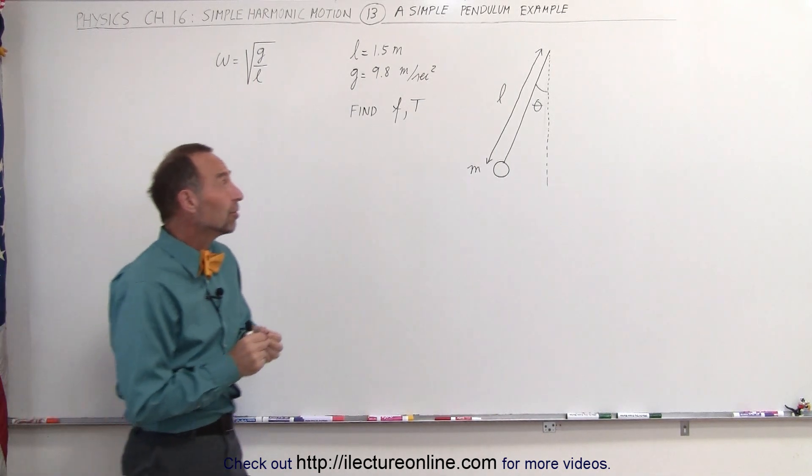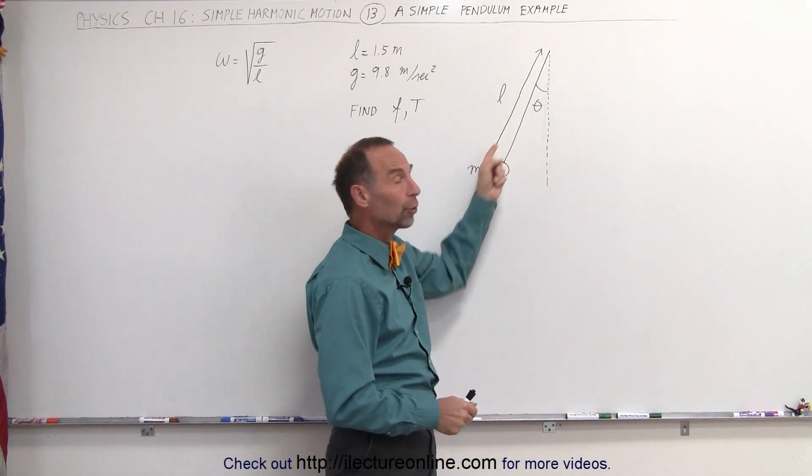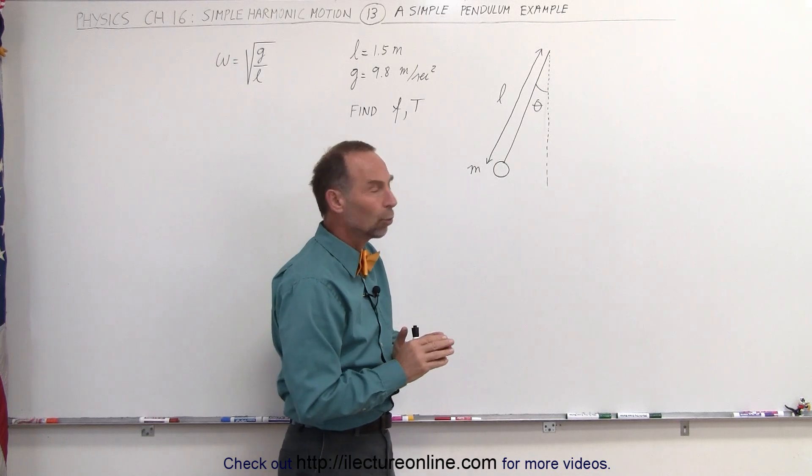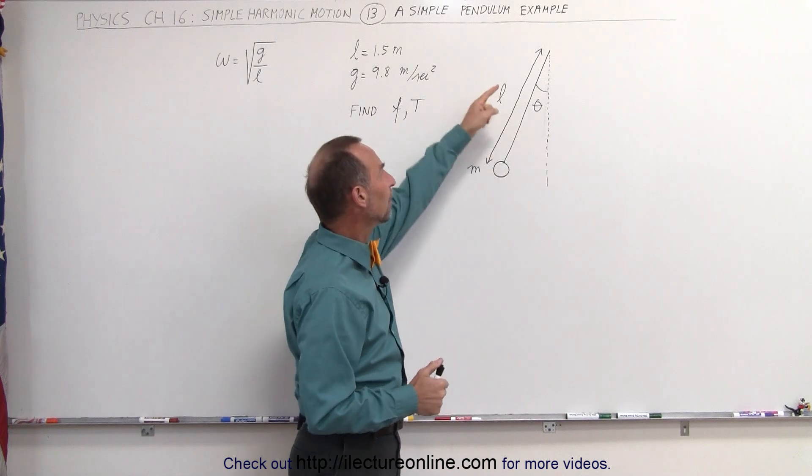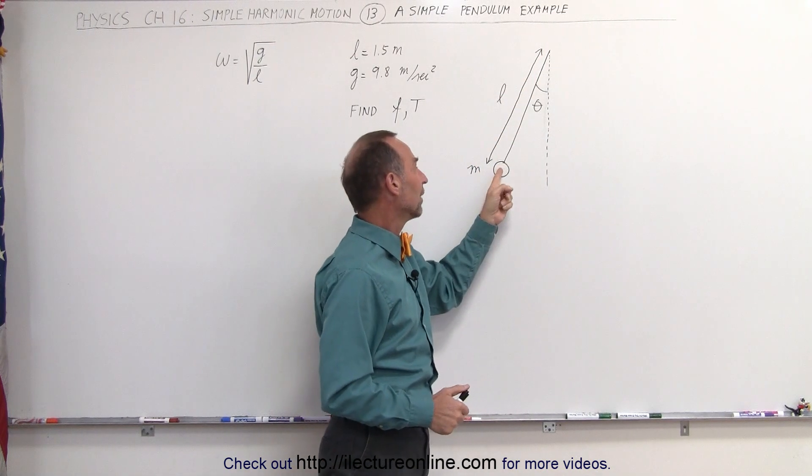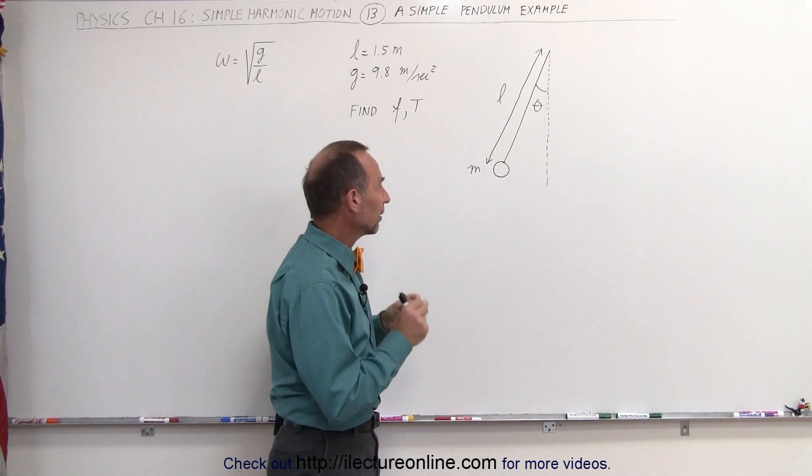A simple pendulum is defined as an object connected to either a rod or a string in such a way that the rod or string has no mass, or we can ignore the mass of the rod or the string, and the length of the pendulum is defined as the point where the pendulum attached to the top down to the center of mass of the object at the bottom of that string or that rod.